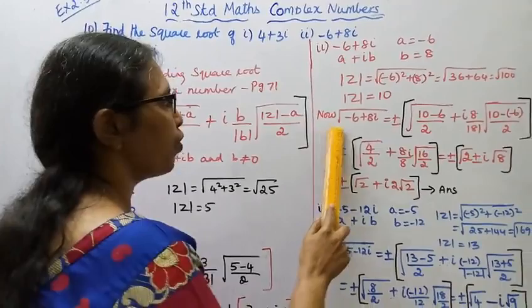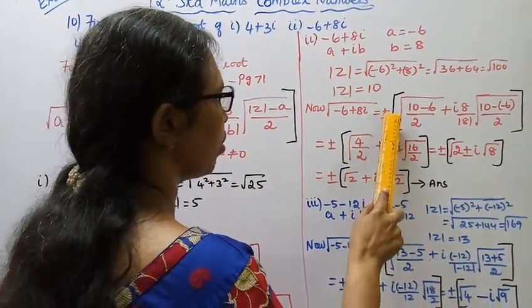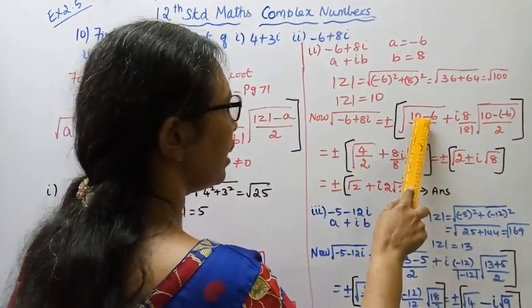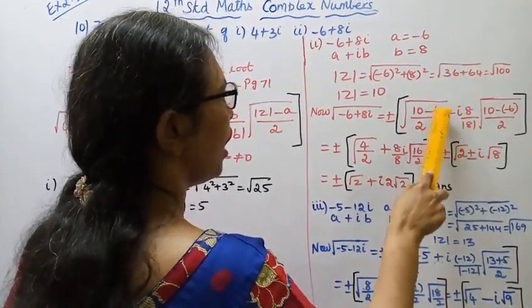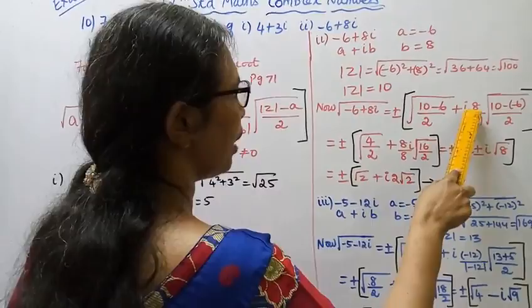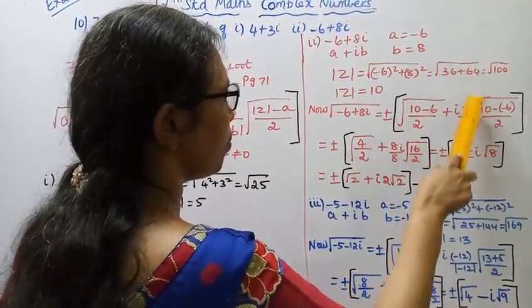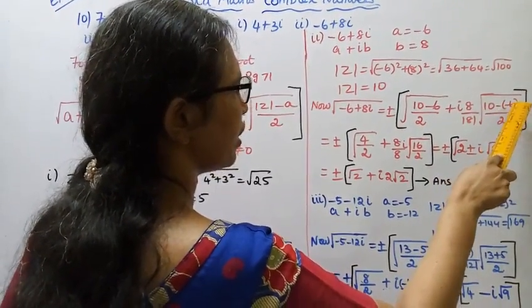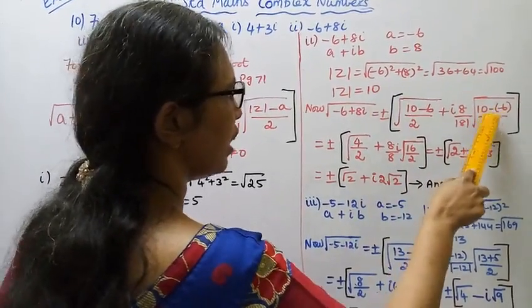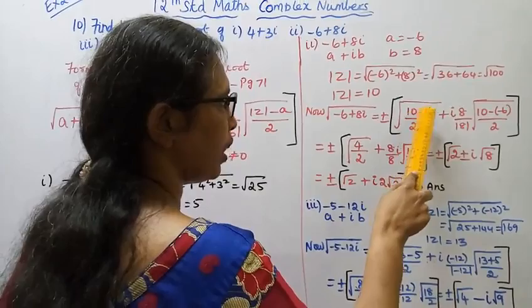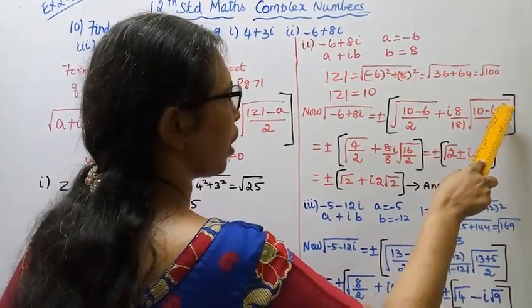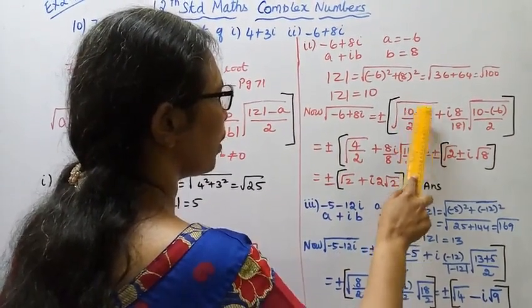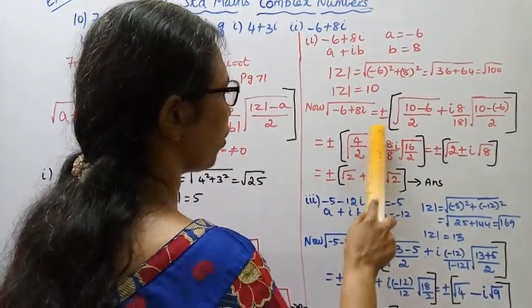Therefore, square root of (minus 6 plus 8i) equals plus or minus: root of (mod z plus a) by 2, that is (10 plus minus 6) by 2, which is (10 minus 6) by 2, equals 4 by 2. Square root of (4 by 2) plus i times (b by mod b), that is 8 by mod 8, into root of (mod z minus a) by 2.